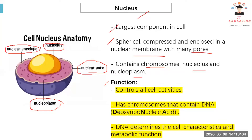The nucleus is like a CPU for your computer, where it controls all the cell's activities. It has chromosomes that contain DNA, which is deoxyribonucleic acid. DNA also determines the cell's characteristics and metabolic function. So DNA is just like memory — it stores all the information of a cell.